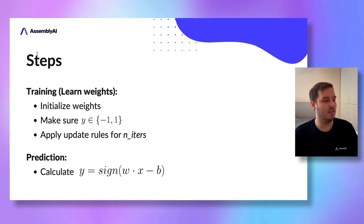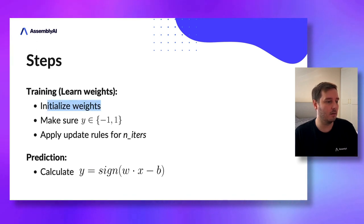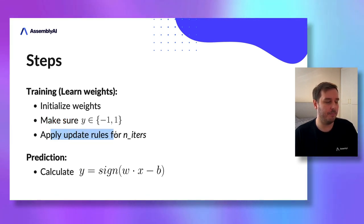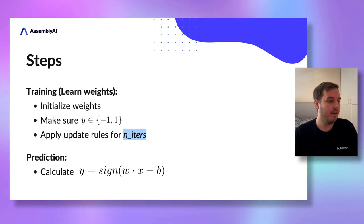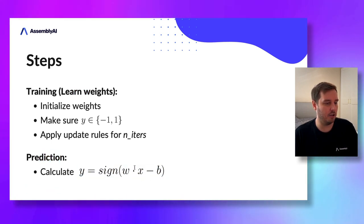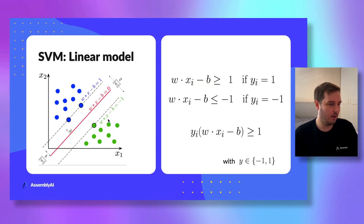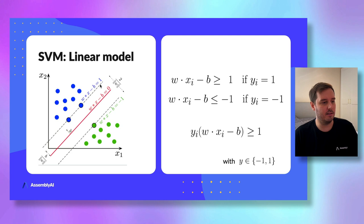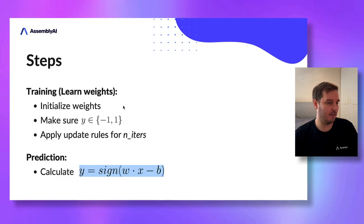To summarize training: we first initialize the weights, make sure class labels are minus one and plus one, then apply the update rules for the specified number of iterations to learn the weights. For prediction, we apply the linear function w times x minus b and take the sign. If the result is greater than zero, the prediction is class one; if smaller than zero, it's class minus one.